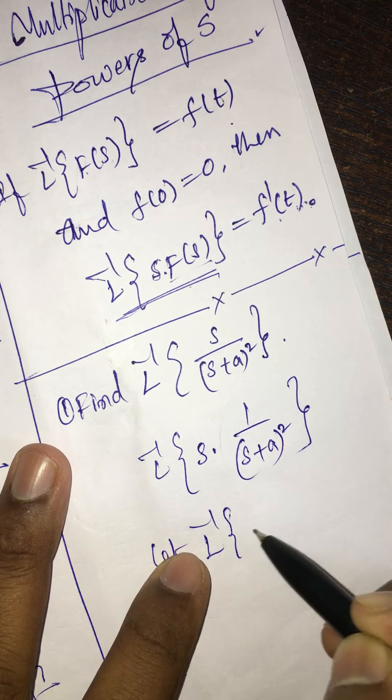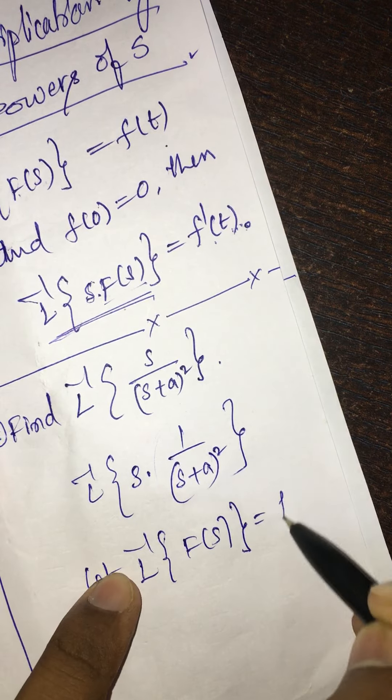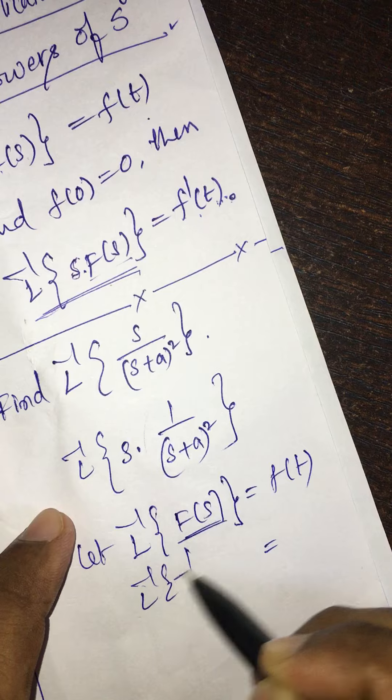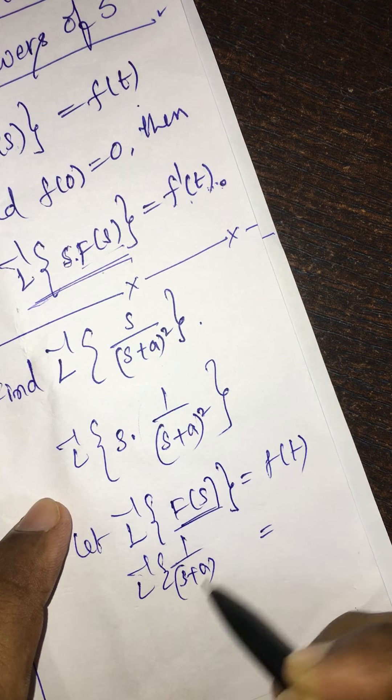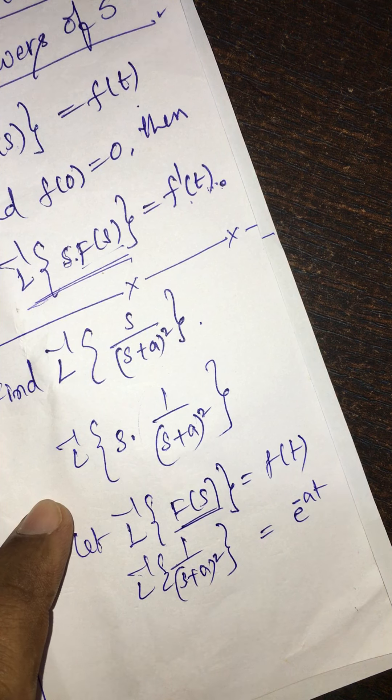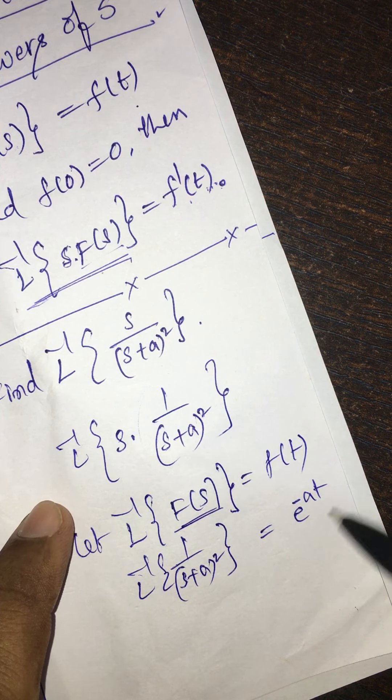L inverse of f(s) is equal to f(t). In this, f(s) is 1/(s+a) whole square, that is equal to e to the power of minus at.